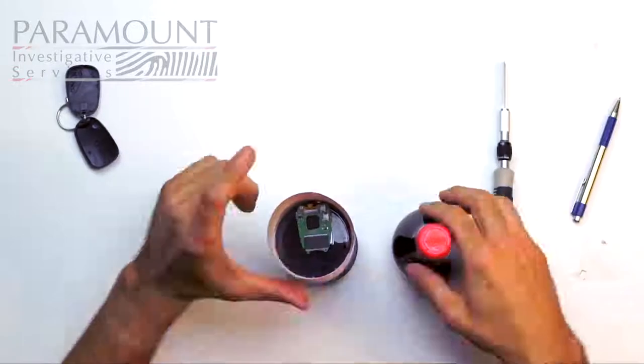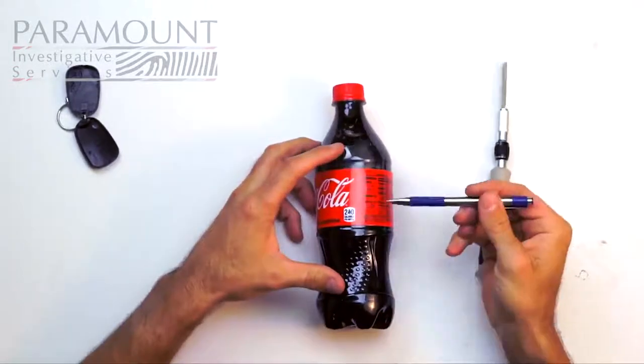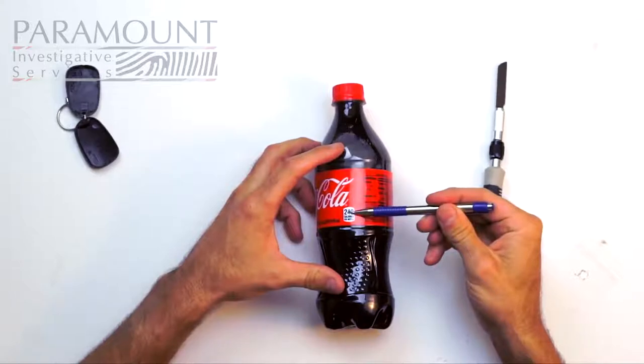And we're all good to go. Put the bottle back together and there you have it, a coke bottle stash hidden camera.